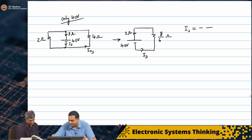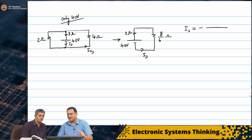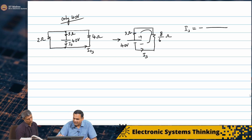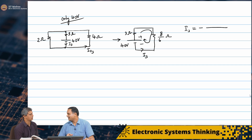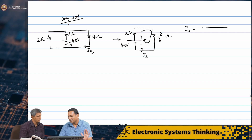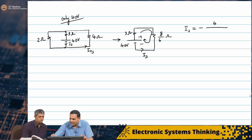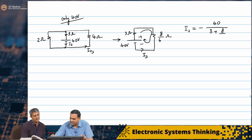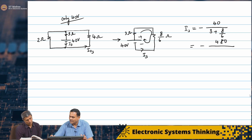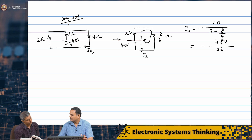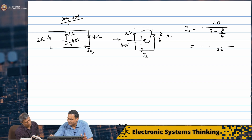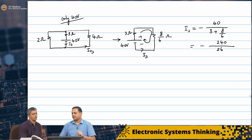I₃ has a negative sign because the 40 volt source drives current opposite to our chosen reference direction — that reference was set based on the 100 volt source. So I₃ = −40 / (26/6) = −240/26 amperes.